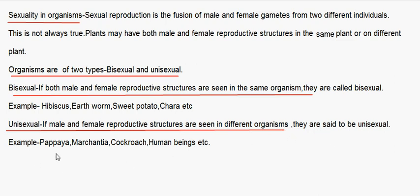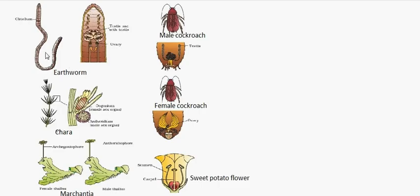Examples of unisexual organisms include papaya, marchantia, cockroach, and human beings. In earthworm and chara, both male and female reproductive parts are seen in the same individual. In marchantia, the female reproductive part called the archegonium is seen in one thallus, and the male reproductive part called the antheridium is in another plant.